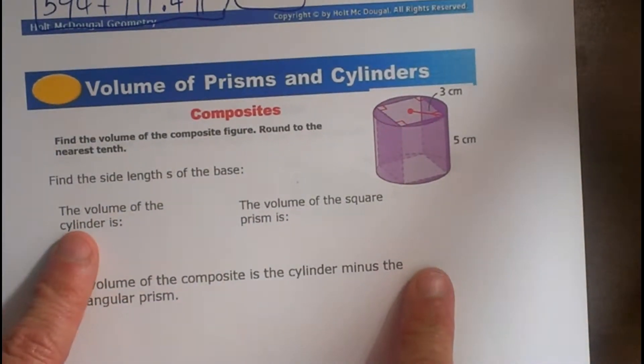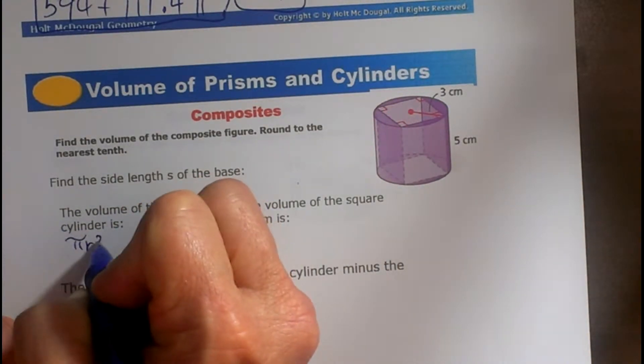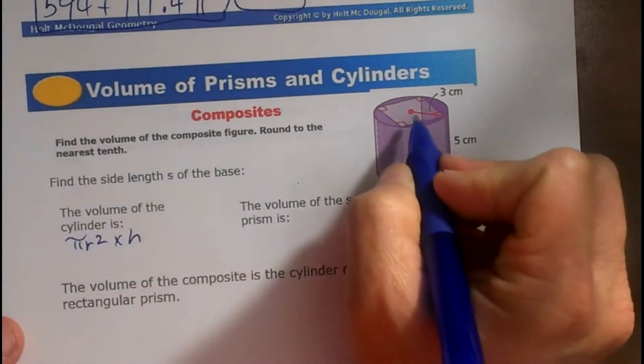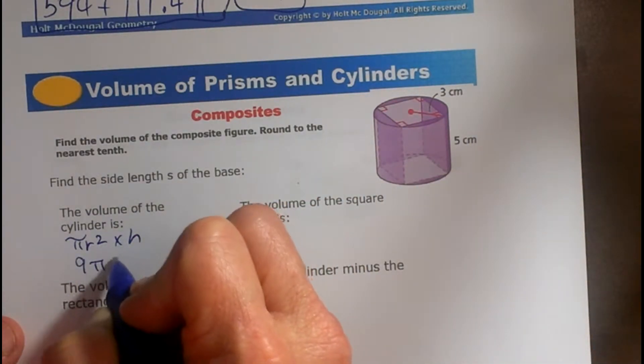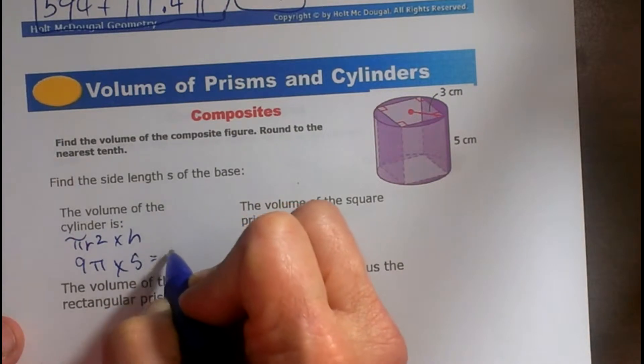So let's first find the volume of the cylinder. Volume of the cylinder is πr² base area times height. So our radius is easy, it is given as 3, so that is going to be 9π times 5 or 45π.